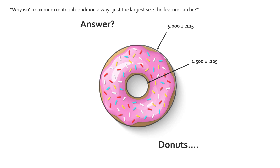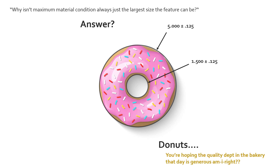Let's say we have a drawing for this donut and the outside is 5 ± 1/8 inch and the inside is 1.5 ± 1/8 inch. What's the maximum material condition of both of these dimensions?